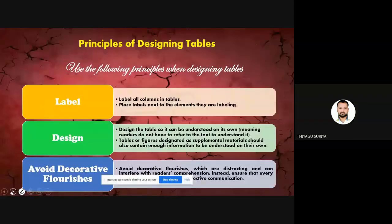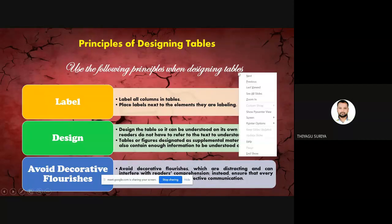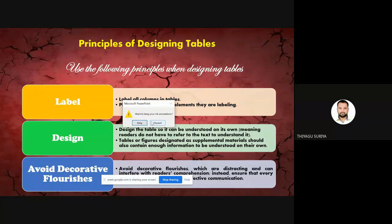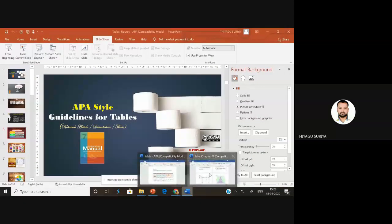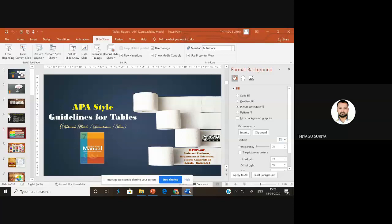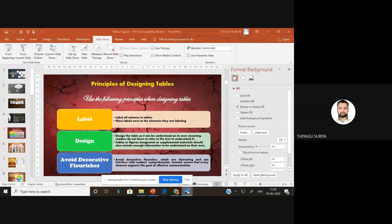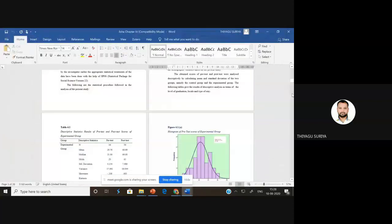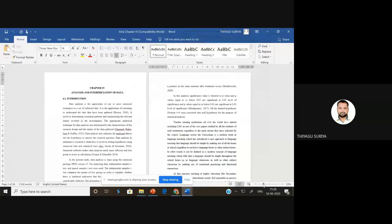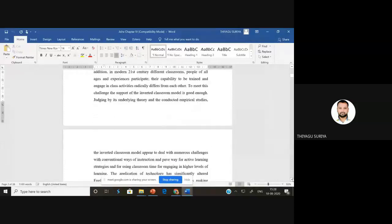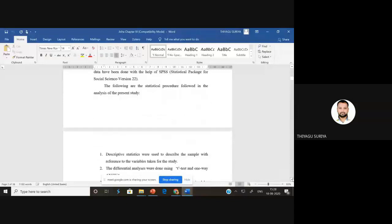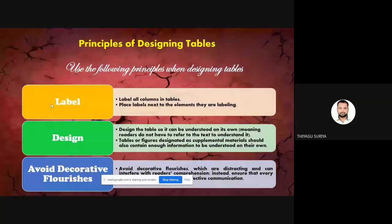These are the principles we have to follow while designing a table. Before going to that, just I'm coming back to look at one researcher's work. I'm going to show in what manner a PhD student did their work. I'm opening one chapter of a PhD thesis — specifically the fourth chapter — to see how she made it with different headings. This fourth chapter consists of 38 pages, and because she's doing quantitative analysis, the chapter consists of a lot of numbers.